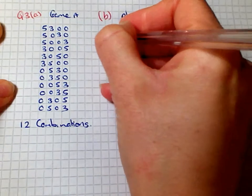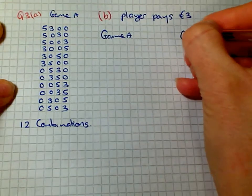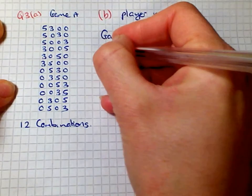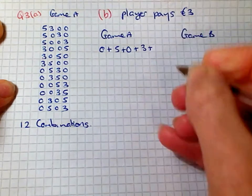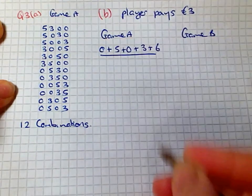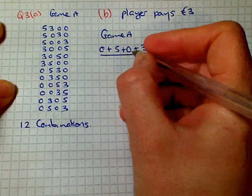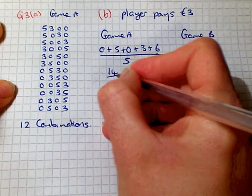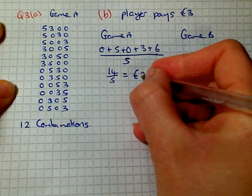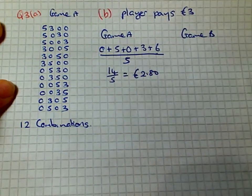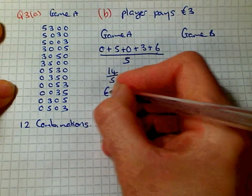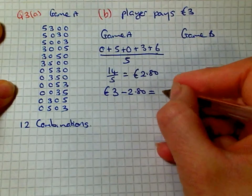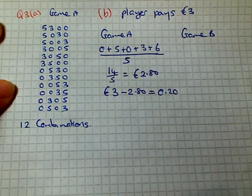Game A: you can get 0 euros, 5 euros, 0 euros, 3 euros, and 6 euros, divided by the number of segments which is 5. So 14 divided by 5, you can win an average of 2 euros and 80 cents. If you pay 3 euros to play the game, take away the 2.80 that you win, the charity would make an average of 20 cents.